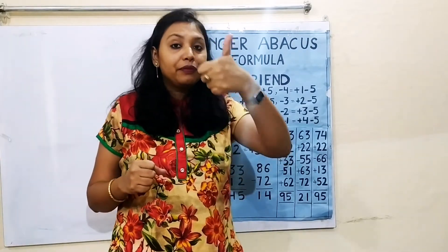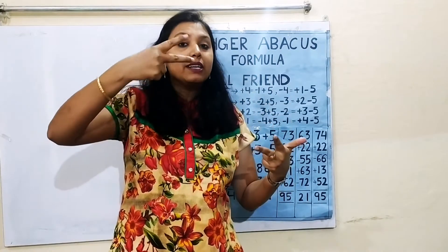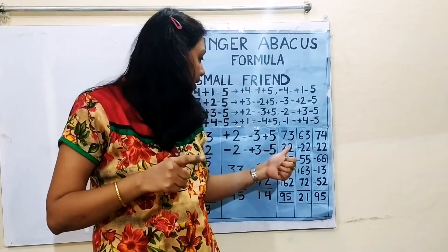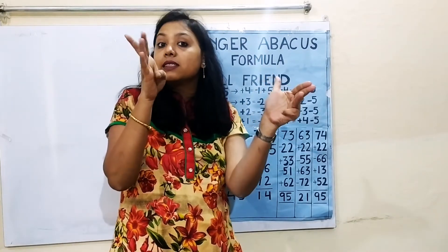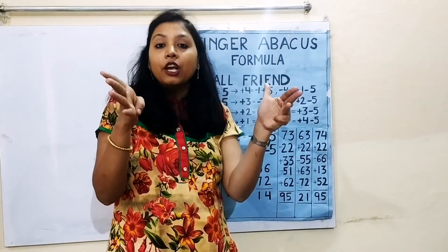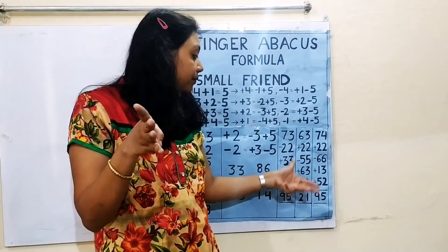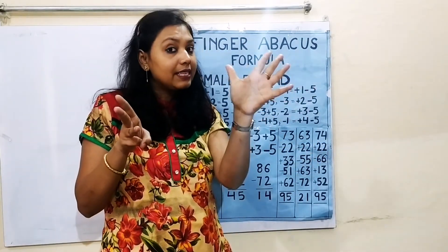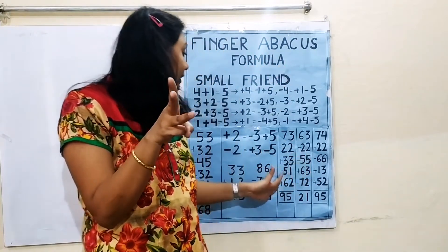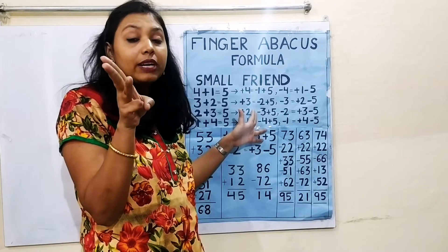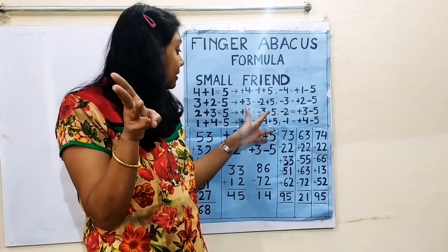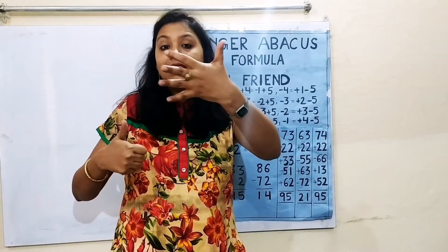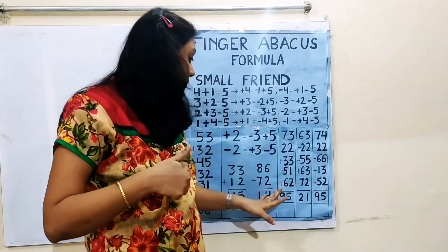Next question: 73. Set 73, then minus 22 — subtract 20 and minus 2. Then plus 33 — add 30 and plus 3; we have the fingers available so no formula needed. Then minus 51 — minus 50 and minus 1. Then plus 62 — plus 60 and plus 2; we use the formula minus 3 plus 5. The answer is 95.